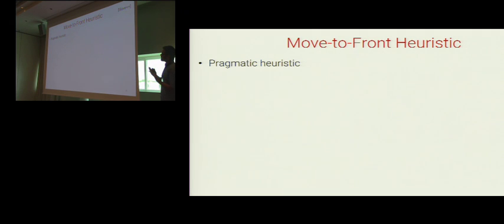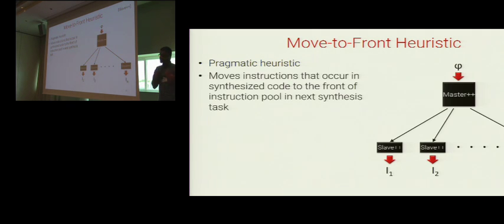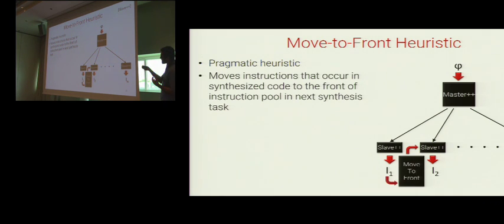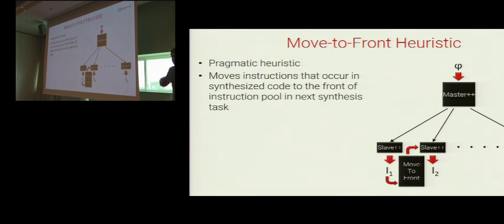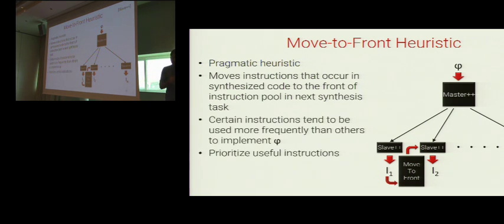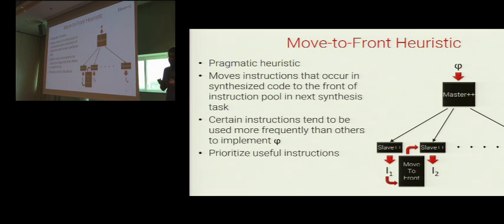Suppose the next candidate is a sub-instruction and psi is its QFBV formula. All the pre-state bits required to implement phi 7 are latent in this candidate — so if we add more instructions we will be able to implement phi 7. The slave retains any candidate if the pre-state bits required to implement phi 7 are possibly latent in that candidate. For pragmatic purposes, the slave also uses a move-to-front heuristic: instructions that occur in a synthesized code are moved to the front of the instruction pool for the next synthesis task. This heuristic is based on the intuition that certain instructions tend to be used more frequently, so it prioritizes such useful instructions.